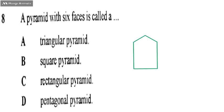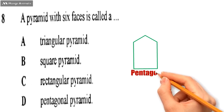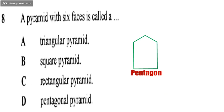What is the name of a polygon which has 5 sides? That is a pentagon. So the pyramid, this is a pentagonal pyramid. This is the strategy you do every time.